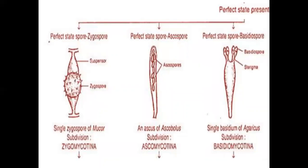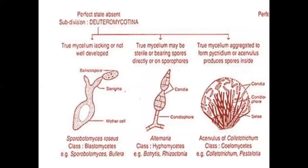Perfect state spores are ascospores within asci, as in Ascobolus — subdivision Ascomycotina. Perfect state spores are basidiospores borne on a single basidium, as in Agaricus — subdivision Basidiomycotina. Where the perfect state of spores is unknown or absent — subdivision Deuteromycotina.